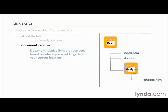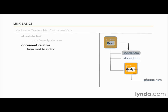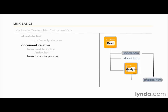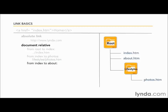Forward slashes are used to denote going into a folder, while dot-dot-forward-slash is used to signify going up and out of a directory. For example, if you were in a subdirectory and needed to access the index page in the root folder, the document relative link would be dot-dot-forward-slash index.htm. If you were on the index page and needed to navigate to the photos.htm page in the lifestyles directory, the link would be resolved as lifestyles/photos.htm. When two files are in the same folder, you can merely resolve the link by using the name and extension of the file.